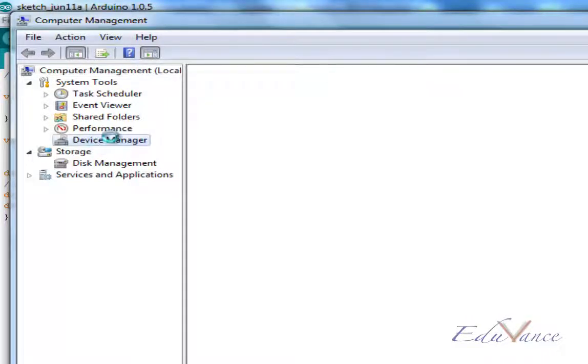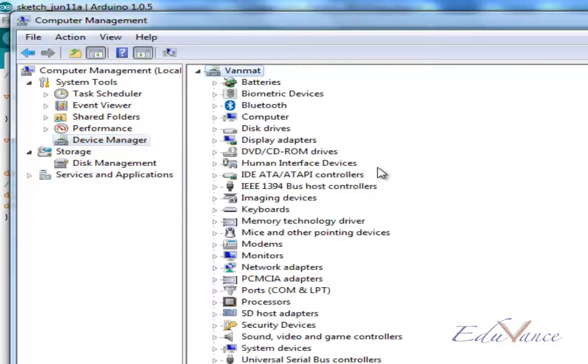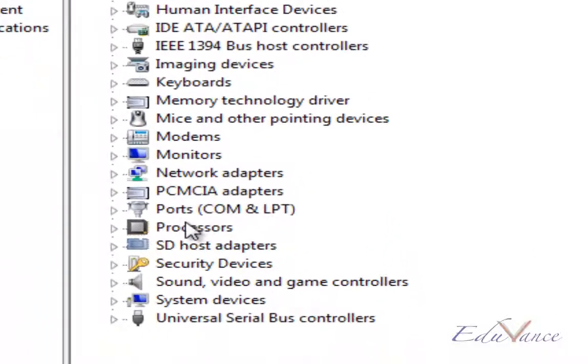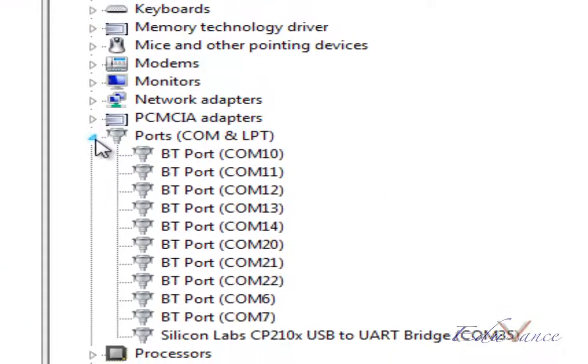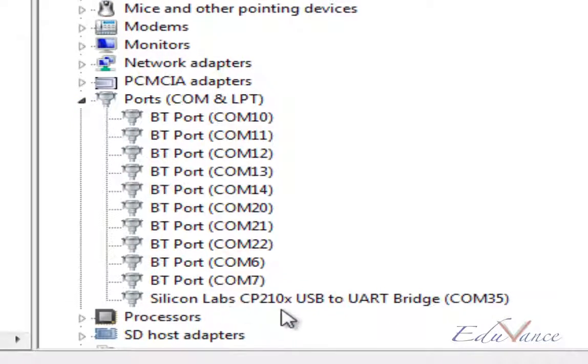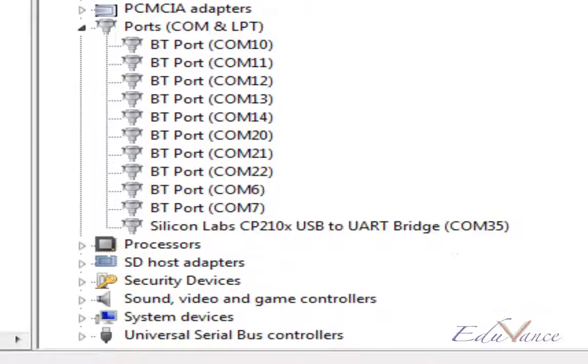You would click on device manager. And then you have the ports COM and LPT section that you would click on. And as you see that the USB to UART bridge which is here is on COM35 on my computer. On your computer you have to see which terminal, which serial port this is connected to.